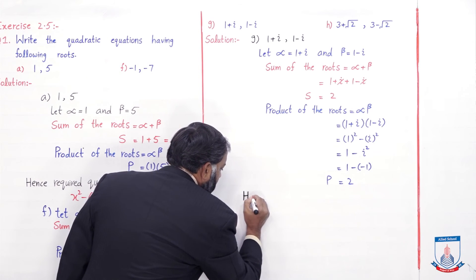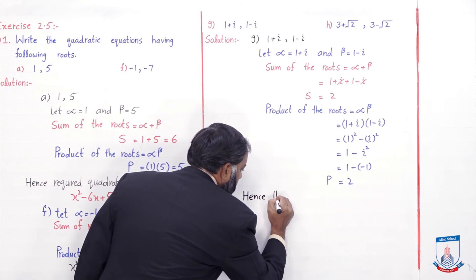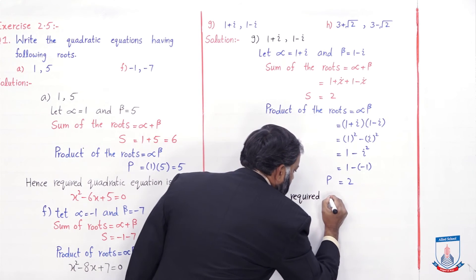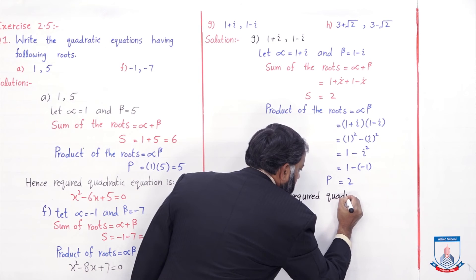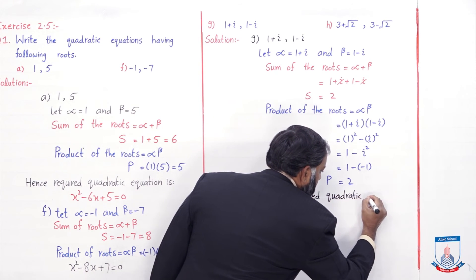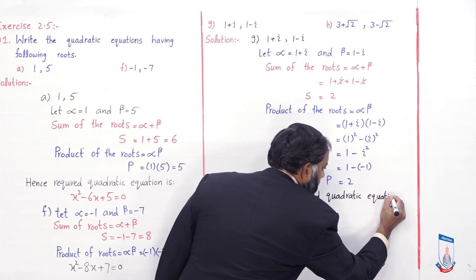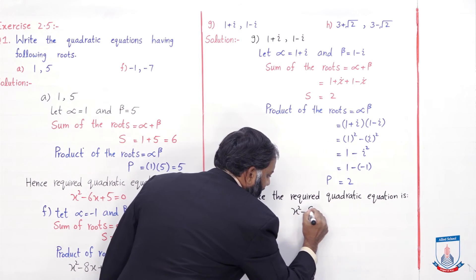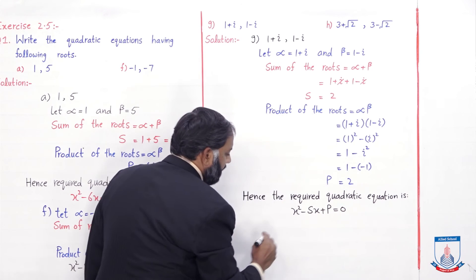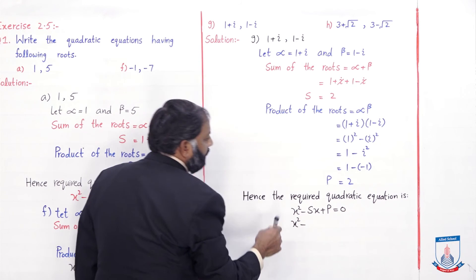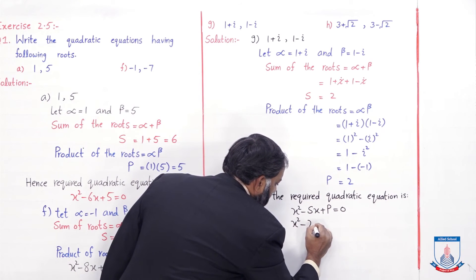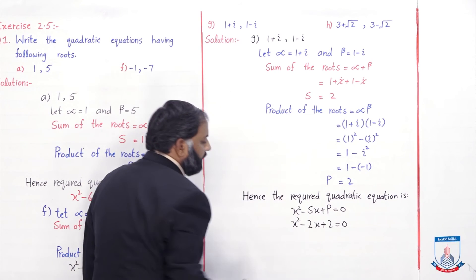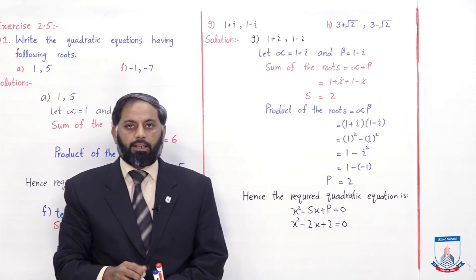Hence the required quadratic equation is x² - Sx + P = 0. S = 2 and P = 2, so x² - 2x + 2 = 0. Students, we were given roots and we found the quadratic equation.